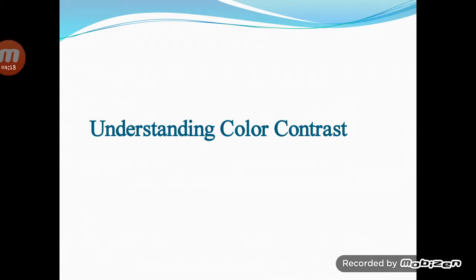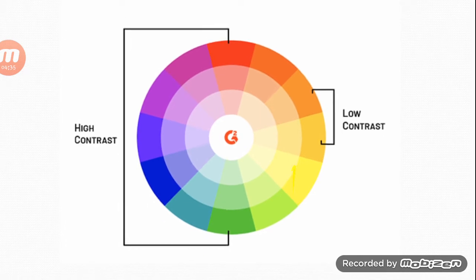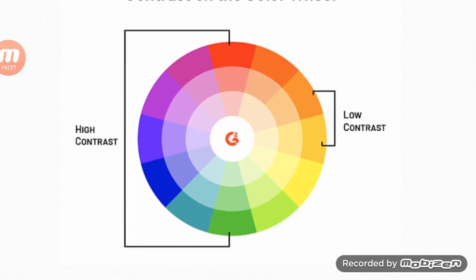Understanding color contrast: it is easy to understand how color can create contrast. Complementary colors provide a high level of contrast. Complementary colors are colors located directly across from each other on the color wheel — red and green, blue and orange, and purple and yellow are all examples of this.